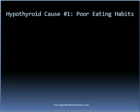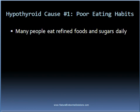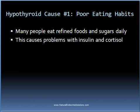Eating foods of poor quality can cause a lot of health problems to develop, including thyroid conditions. This is a common problem as many people consume a regular diet consisting of refined foods and sugars. Whenever you eat a refined food or sugar, it spikes up the blood sugar levels, which causes insulin to be released. This then causes the blood sugar levels to crash and the hormone cortisol is then released by the adrenal glands.